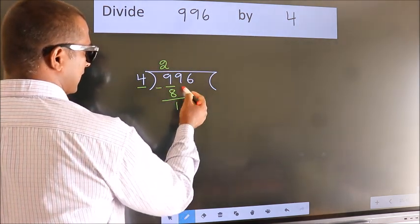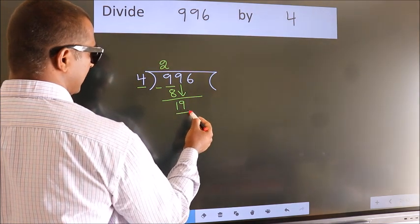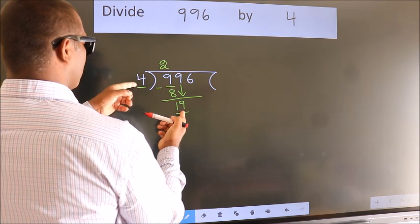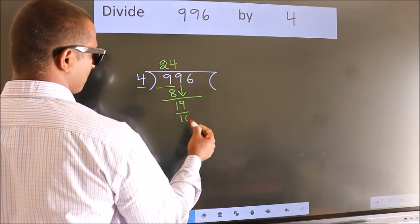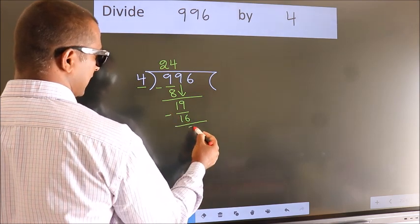After this, bring down the beside number. So 9 down. So 19. A number close to 19 in 4 table is 4 fours, 16. Now we subtract, we get 3.